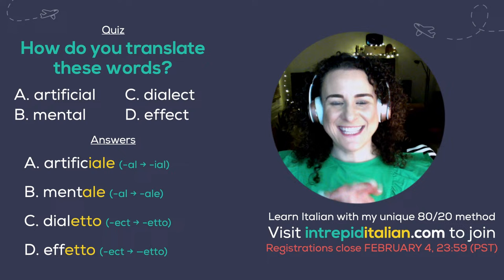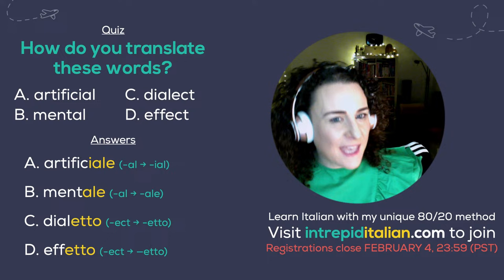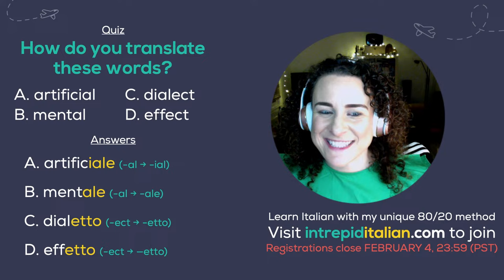And the answers are: artificial becomes 'artificiale,' mental becomes 'mentale,' dialect becomes 'dialetto,' and effect becomes 'effetto.' Let me know how many you got right — how many correct out of four?